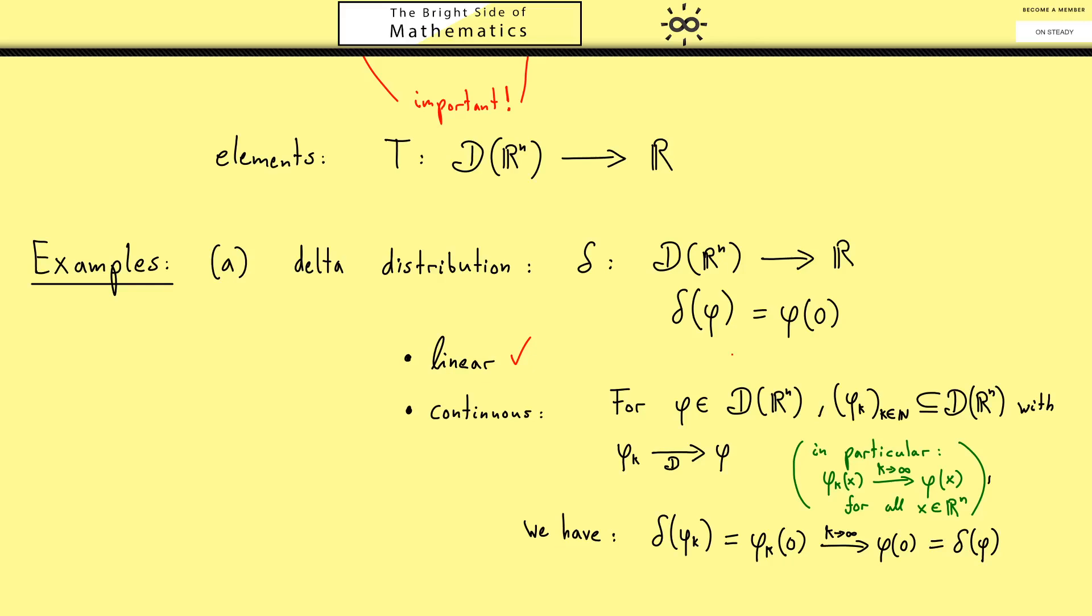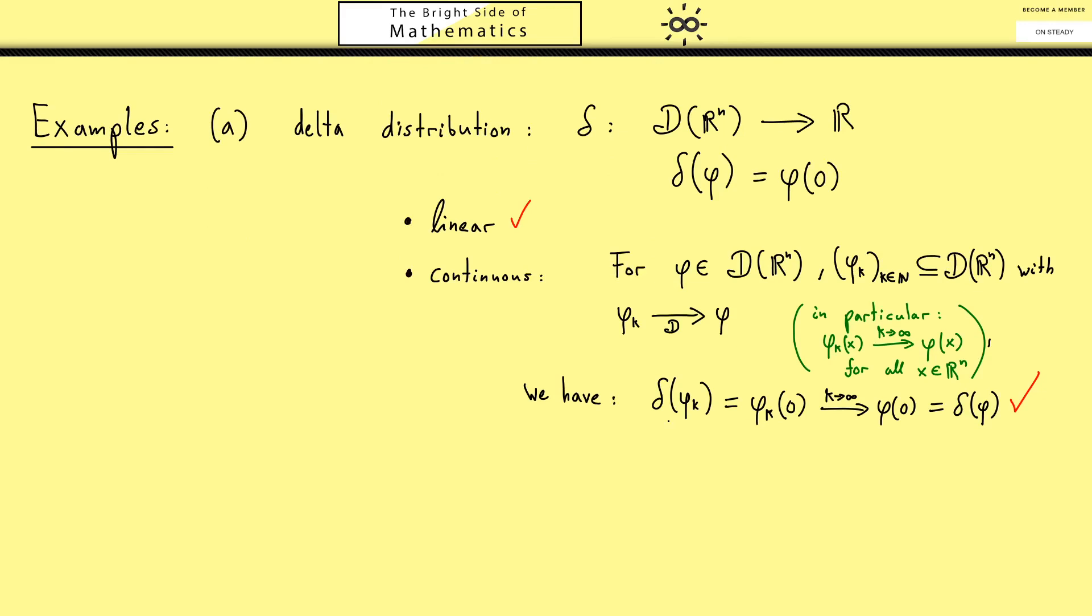And also by definition this is delta(phi). Now what you can see here is that this holds no matter which function phi we choose and no matter which sequence we choose, as long as this property is fulfilled. And then we reach a property we called sequentially continuous before. And there we have one example of a distribution. And you remember this was the one we wanted to describe from the beginning, Dirac's delta distribution.